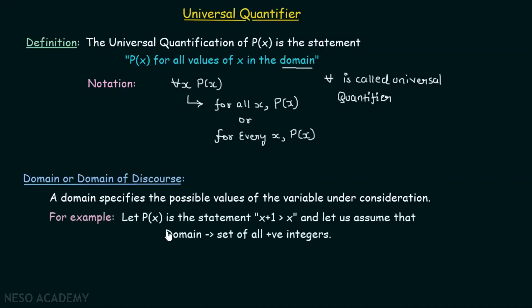For example, let us consider the P(x) which is the statement x plus one greater than x, and let us assume that domain is a set of all positive integers. We will consider all positive integers as values of x. So we can take P(1), P(2) and so on up to P(n). They must be all positive integers. That is the condition. Basically, domain gives us the restriction. This tells us the possible value that we can take for x.